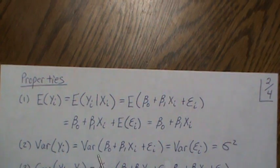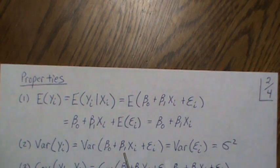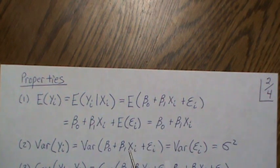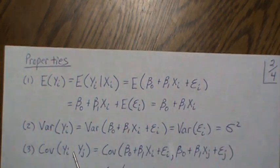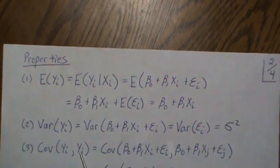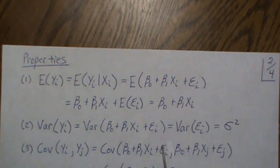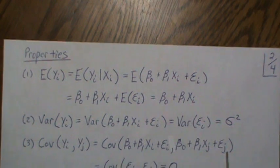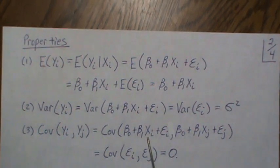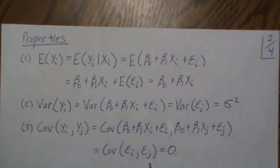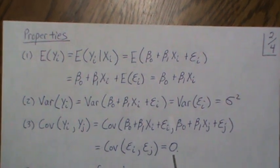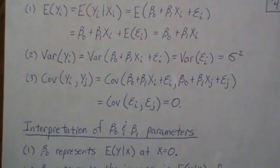The variance of y is just the variance of epsilon, which is sigma-squared, since the constant terms don't factor into the variance. The covariance between any two data points y_i and y_j reduces to the covariance of epsilon_i and epsilon_j, which by SA3 is zero.